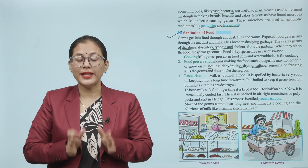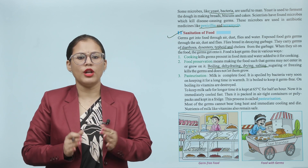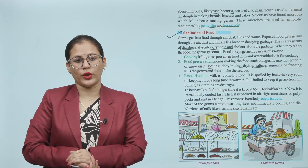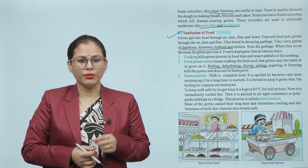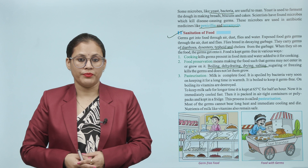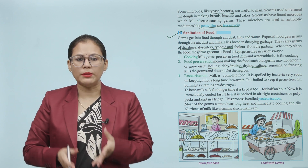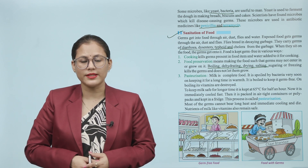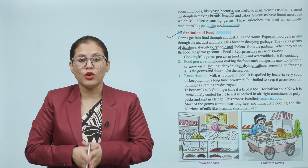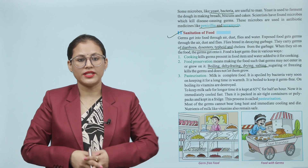Number three: Pasteurization. Milk is a complete food. It is spoiled by bacteria very soon if kept for a long time. It is boiled to keep it germ-free, but on boiling, its vitamins are destroyed. To keep milk safe for a longer period, it is kept at 65 degrees Celsius for half an hour, then immediately cooled fast, and packed in airtight containers or poly bags and kept in a fridge. This process is called pasteurization. Most germs cannot bear prolonged heat and immediate cooling, and die. Nutrients of milk like vitamins also remain safe.